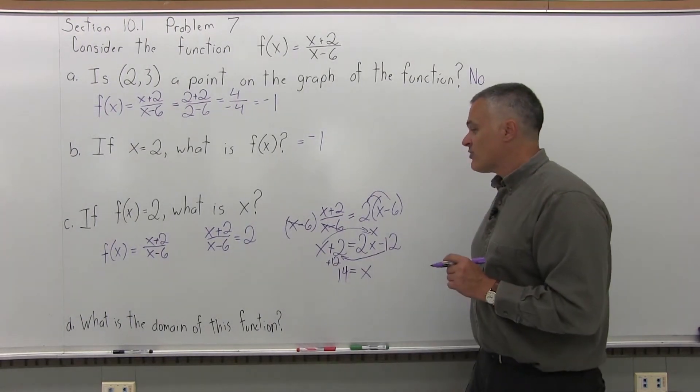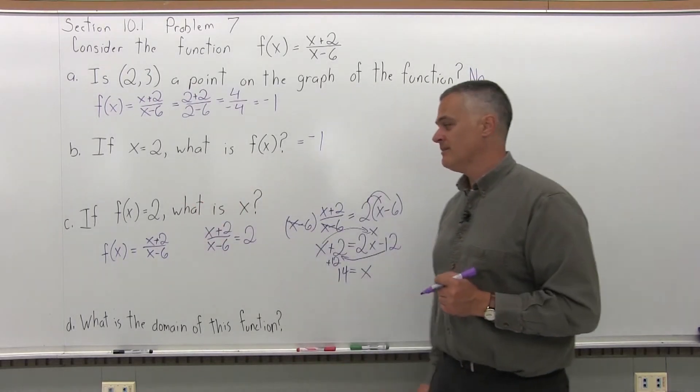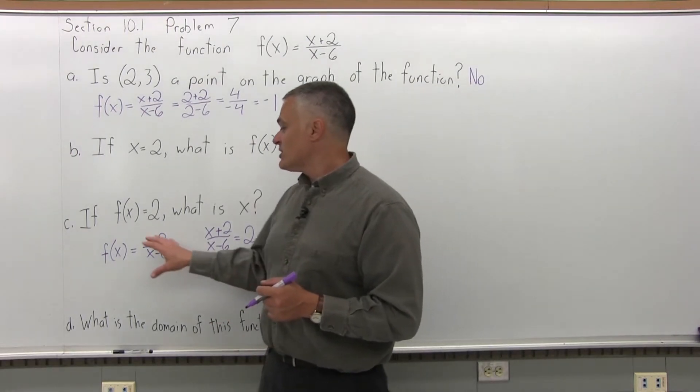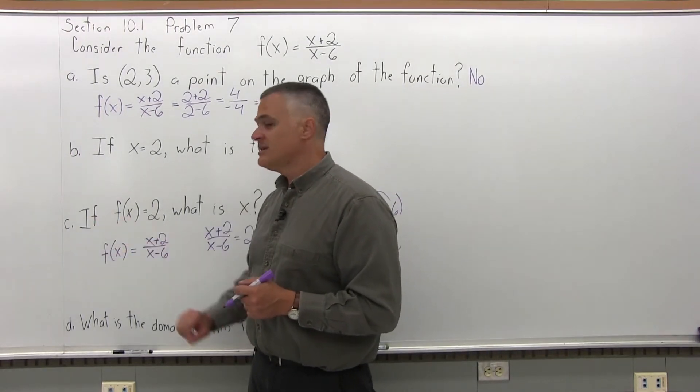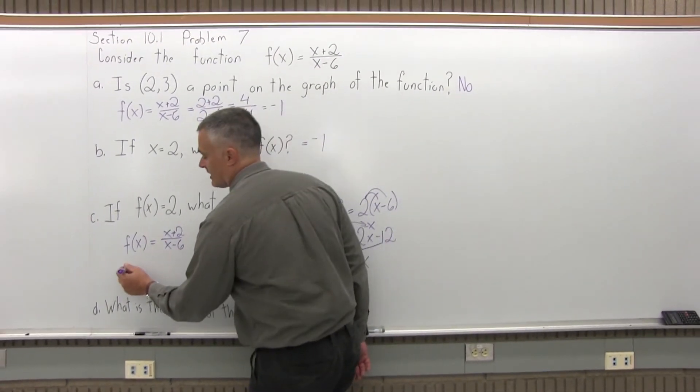So if I did the math right, in order to get out a 2, I must have put in a 14. And what's nice about this type of math is you can check it. So I have the original function written underneath part C here. Let's put in a 14 and see if we get out a 2. You'll know for sure if it's right.